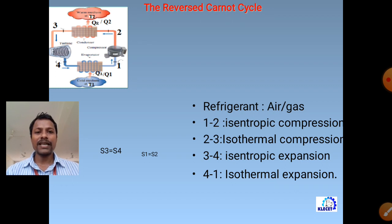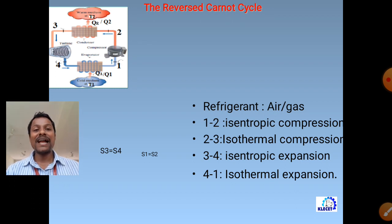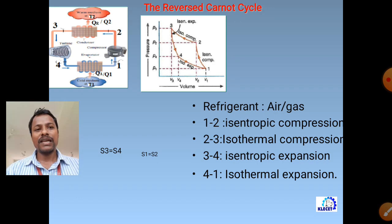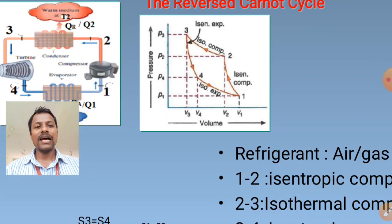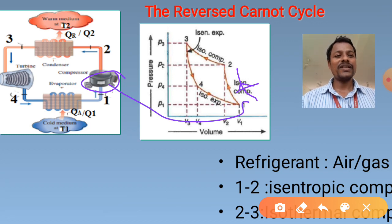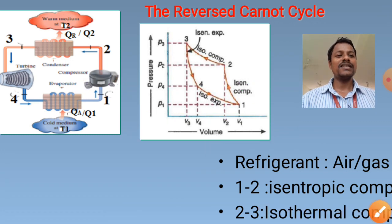The schematic diagram of the reversed Carnot cycle is shown. For conducting this cycle, we require four devices: compressor, condenser, turbine (instead of expansion valve), and evaporator. The cold environment is maintained at temperature T_1 (cold space temperature) and the warm environment (atmospheric temperature) is T_2. Air (or gas) is used as the working fluid.